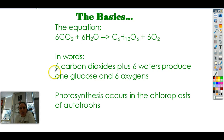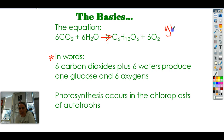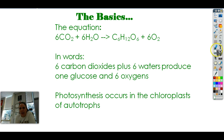So in words, this equation states: six carbon dioxide plus six waters produce — that arrow means produce, or yield — one glucose and six oxygens. You've got to know that. I'm not going to have you match it. I'm going to say, 'What is the equation for photosynthesis?' and you've got to rattle it out from your brain.